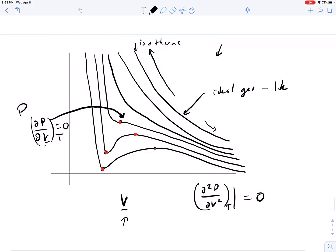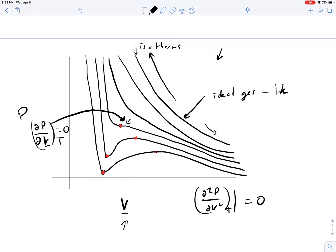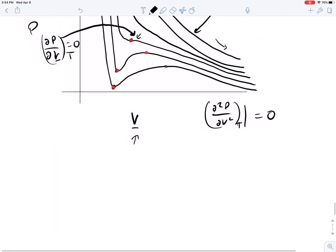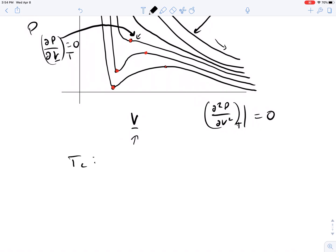This point right here that I've highlighted in red occurs on the isotherm where T is equal to some Tc. And everything to the right of that in this region is T greater than Tc. Everything to the left of that is T less than Tc, where Tc is known as the critical temperature.